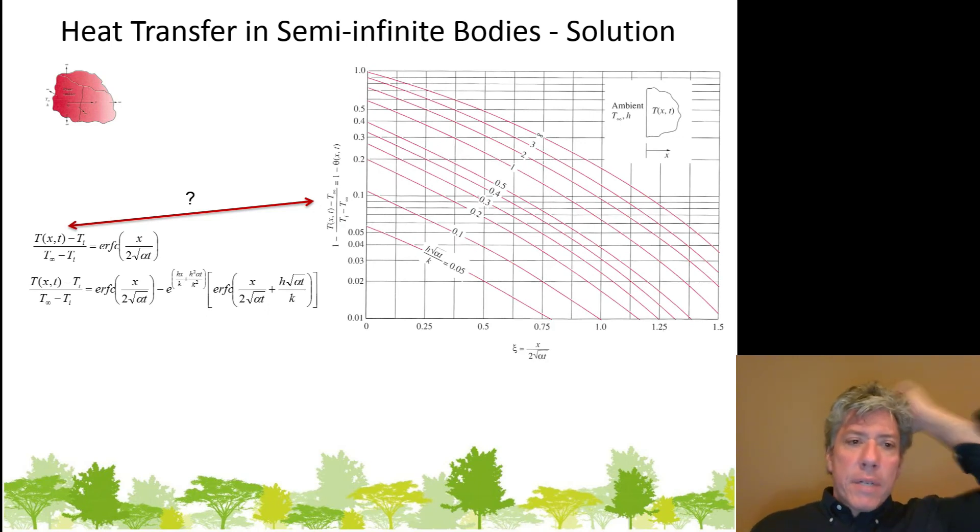Now, this seems a little bit different. If you're an eagle-eyed student and you've looked at this carefully, you might have noticed, well, wait a second. T of x,t, that's the position within the body at whatever time I care about. Fine. But usually we subtract off T infinity, the temperature of the fluid. Here we're subtracting off the initial temperature of the body. And then we're dividing by T infinity minus Ti, and it's usually the other way around. What is going on here? Why is this different?